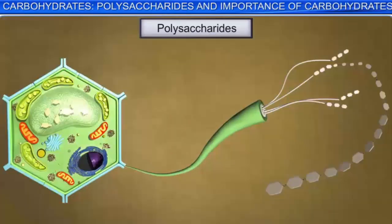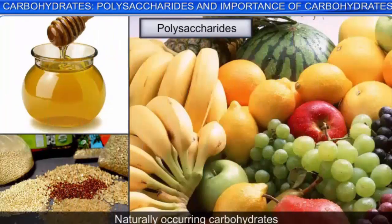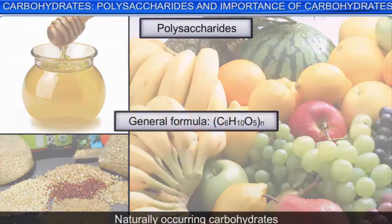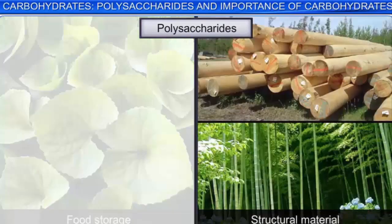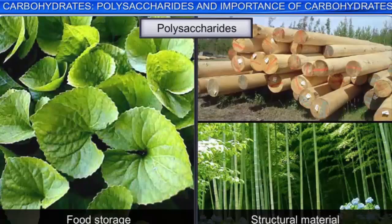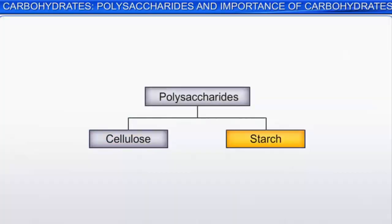Polysaccharides contain many monosaccharide units joined together by glycosidic linkages. Polysaccharides are the most common naturally occurring carbohydrates. A polysaccharide has the general formula (C6H10O5)n. They play important roles in food storage and as structural material. Cellulose and starch are the most important polysaccharides. Starch is the main storage polysaccharide of plants.